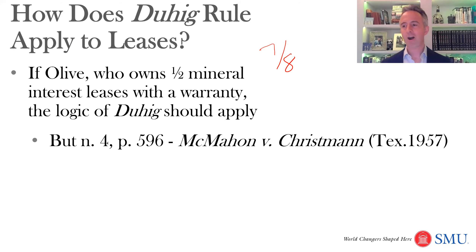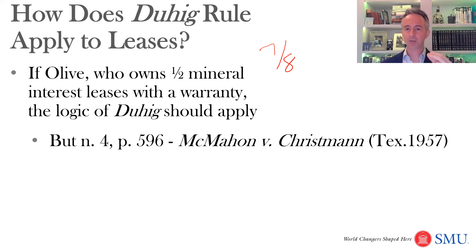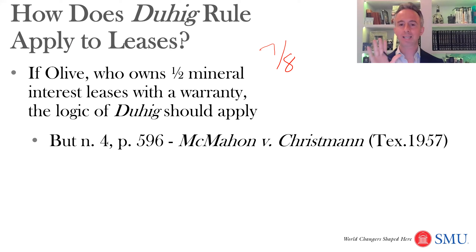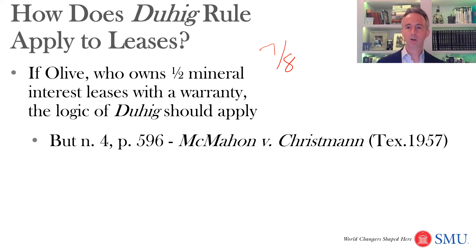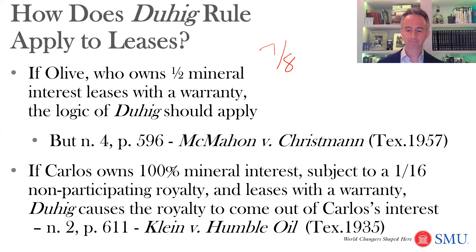In practice, courts have found that result too harsh. They recognize that landowners often lease their land without realizing there are outstanding mineral interests, and that oil and gas companies should be the experts in leasing — which is why they spend a lot of time on title work before leasing. As a result, courts say the proportionate reduction clause is enough in this situation. So if Olive leased claiming to own the whole thing but only owned one-half, she gets just a one-sixteenth royalty — her share is proportionately reduced. There may still be some warranty claim, but her royalty is simply reduced by proportionate reduction.